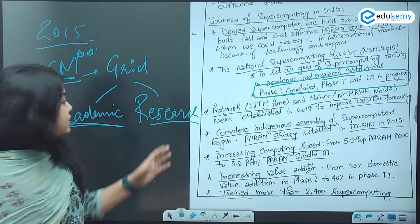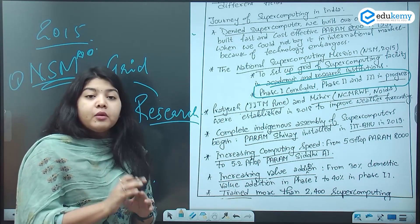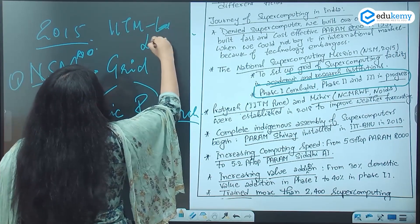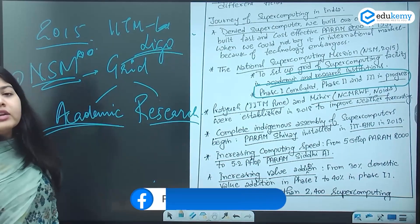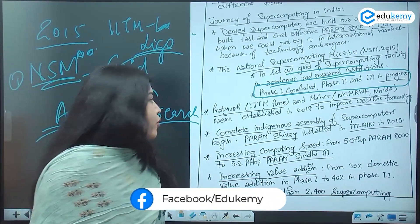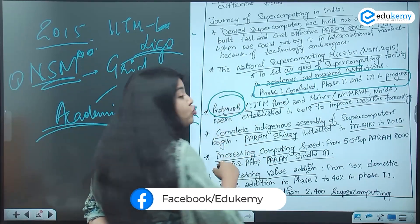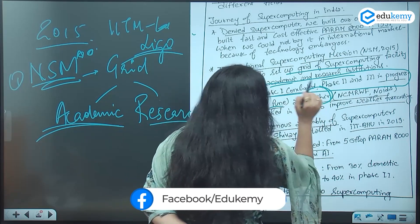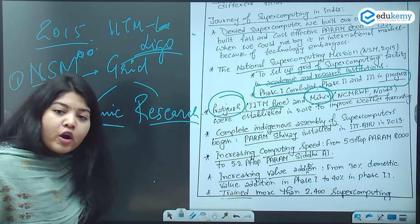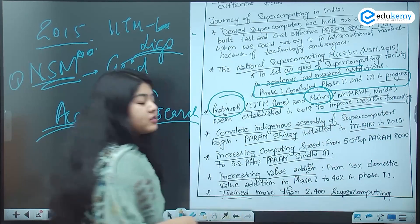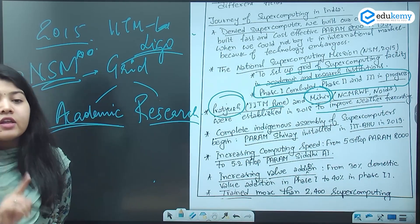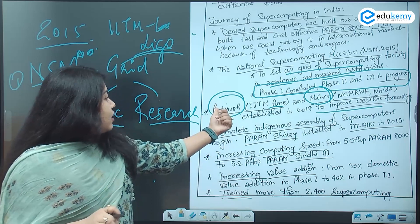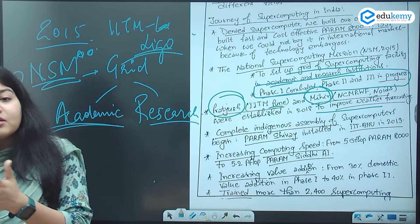Coming to the Pratyush Mission — Pratyush is given by IITM Pune, a very important institute. Apart from that, Mihir is the name of the supercomputer in Noida, whereas Pratyush is the name of the supercomputer in Pune. These two supercomputers are about weather forecasting. Supercomputers initially were used for weather forecasting in India — Pratyush in Pune, Mihir in Noida.